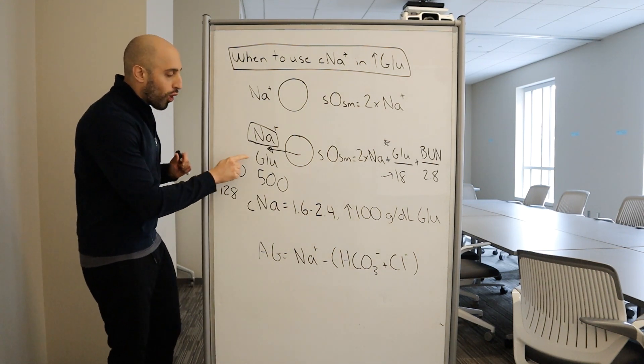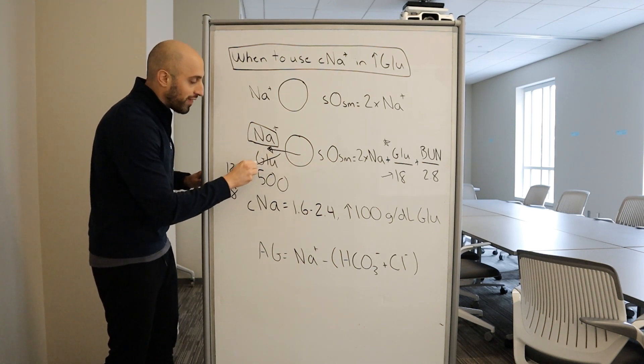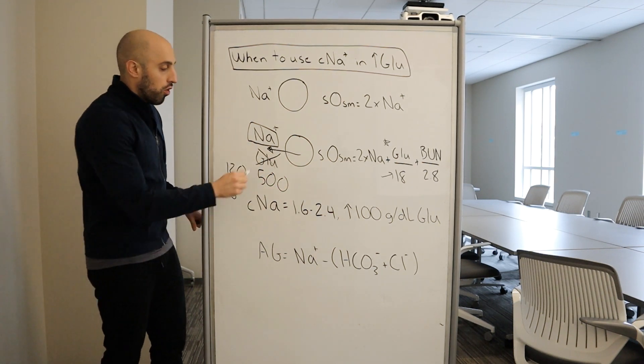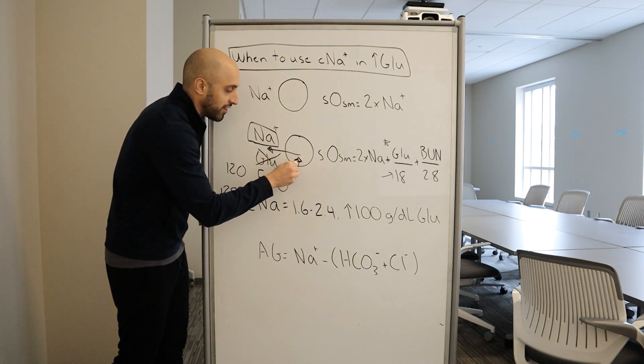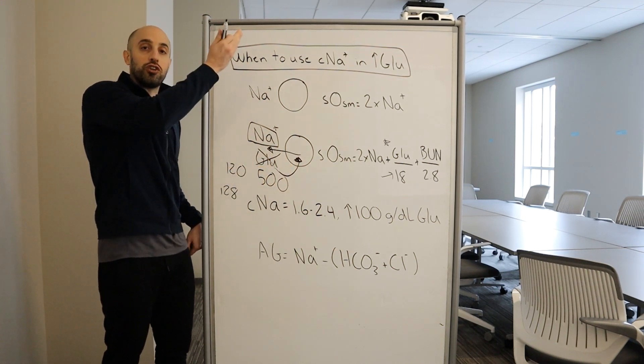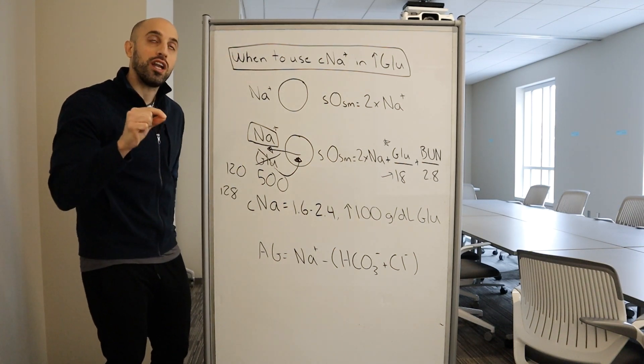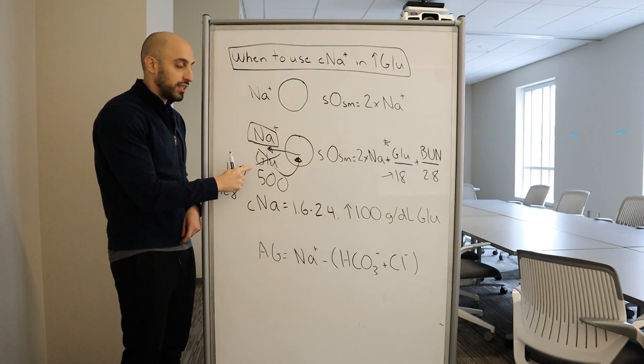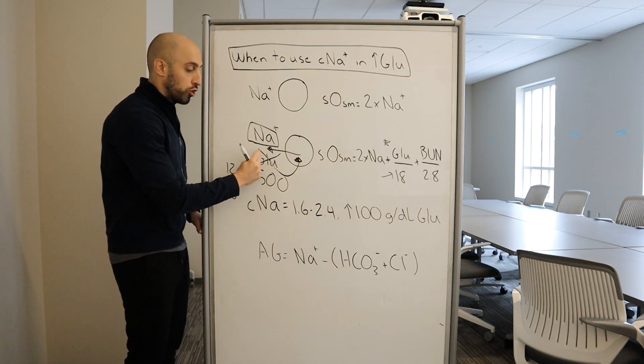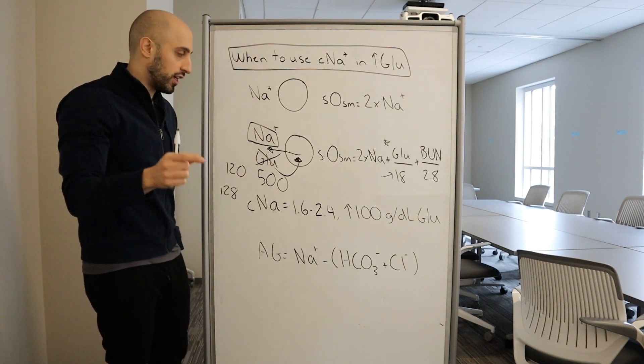Another reason, what happens when you correct the glucose? Well, if you take away this tonic particle, now the concentration has decreased extracellularly, so water is going to shift back into the cell, and the sodium concentration is going to rise. That's why you don't want to treat the measured sodium in the setting of hyperglycemia. If you treat it and you correct the glucose, your sodium is going to overshoot significantly.